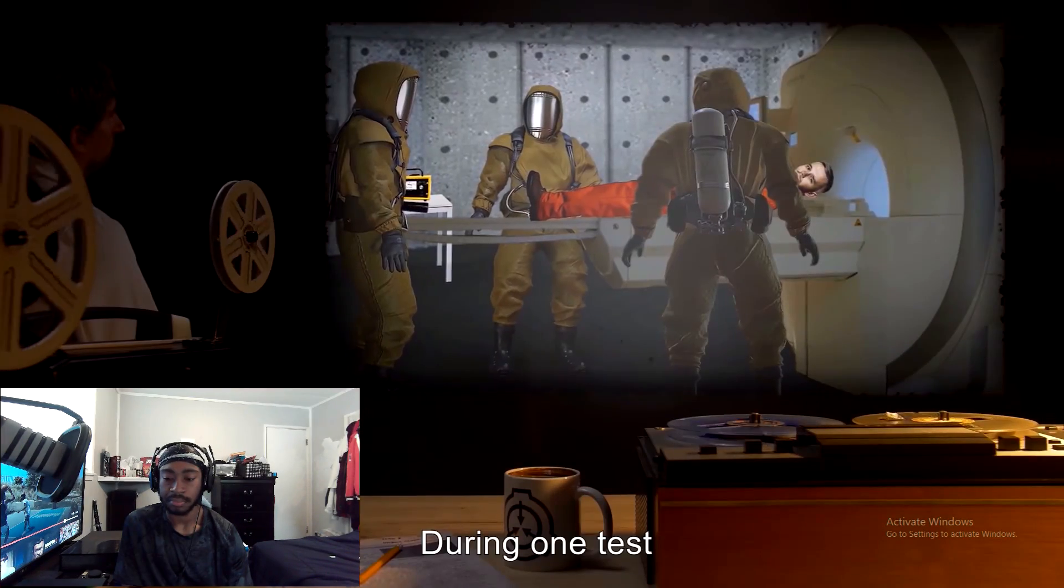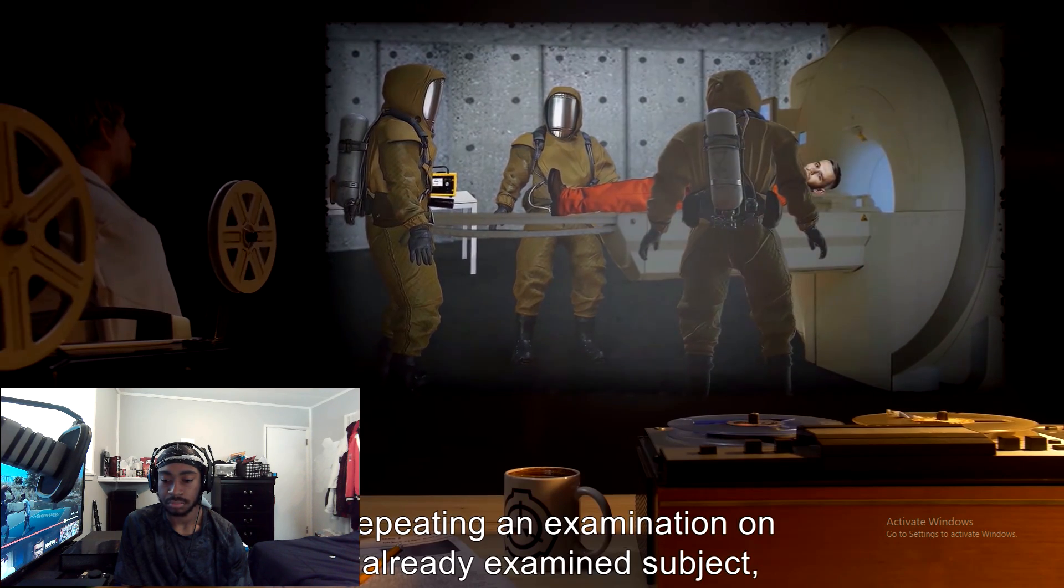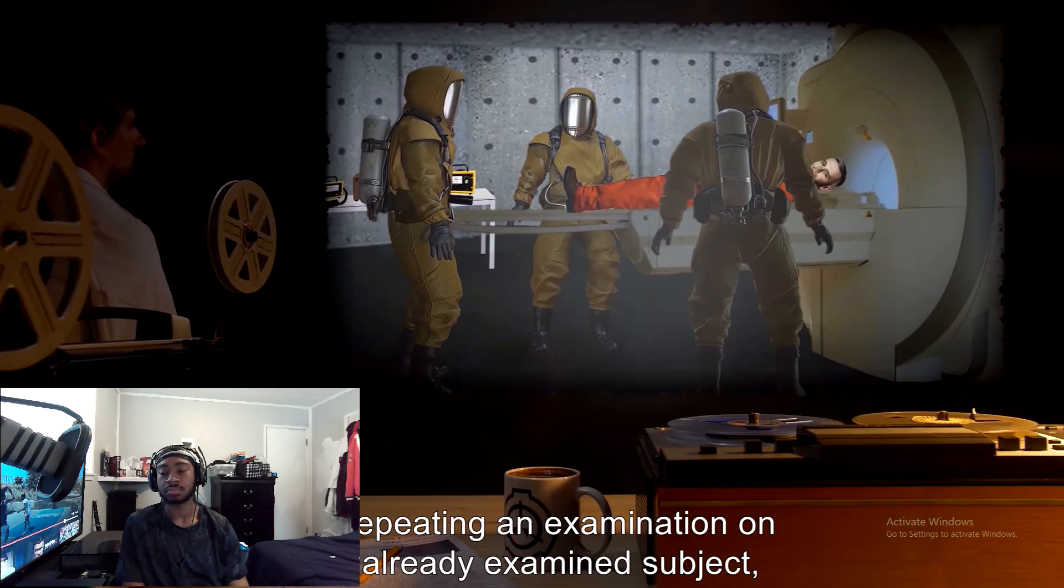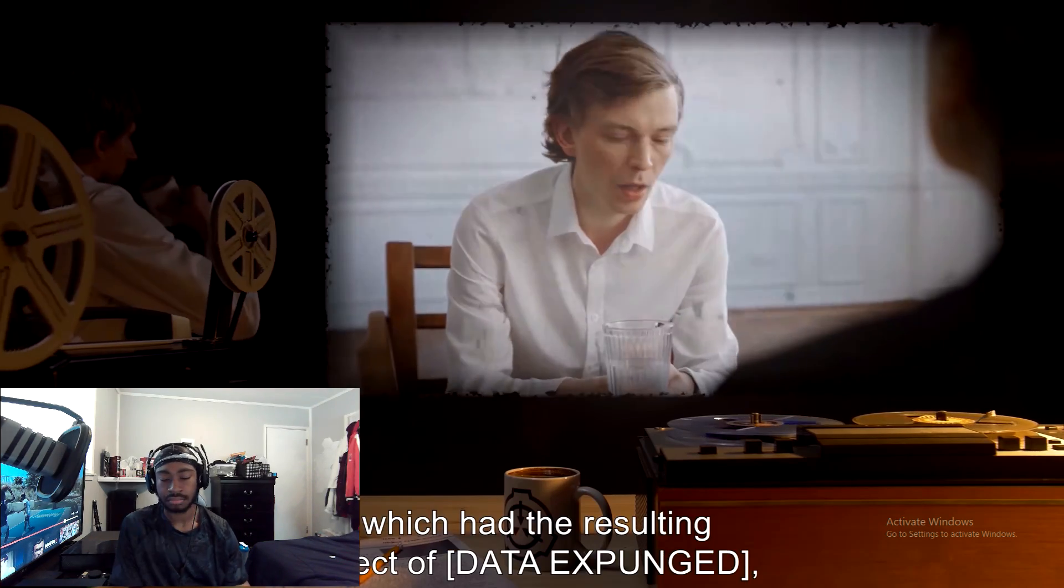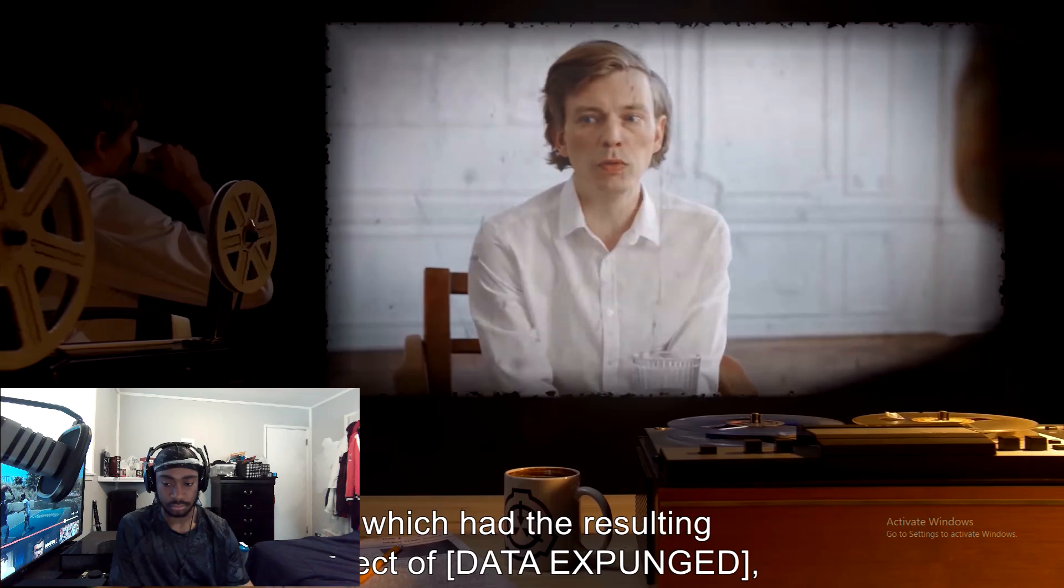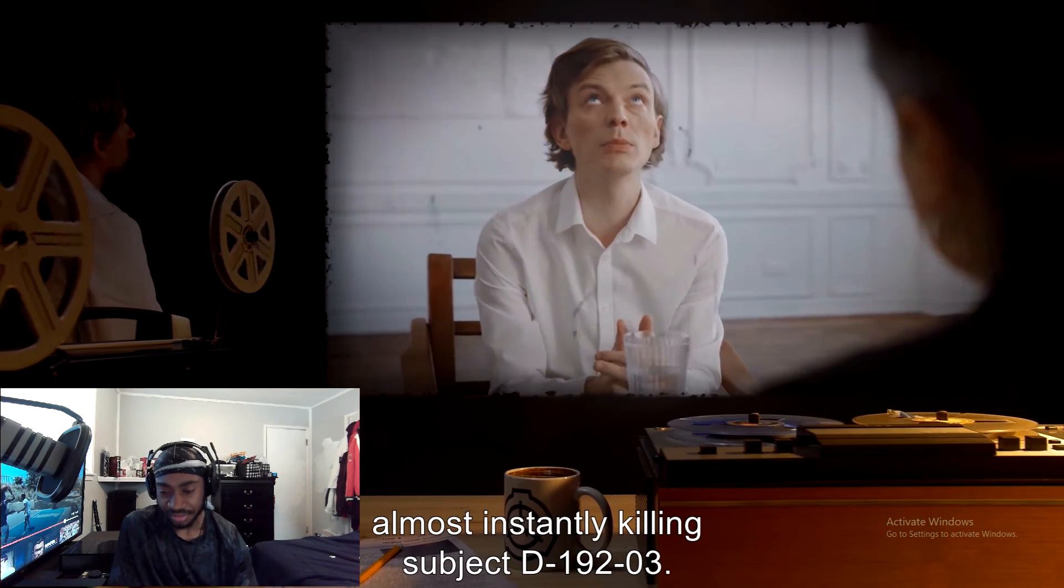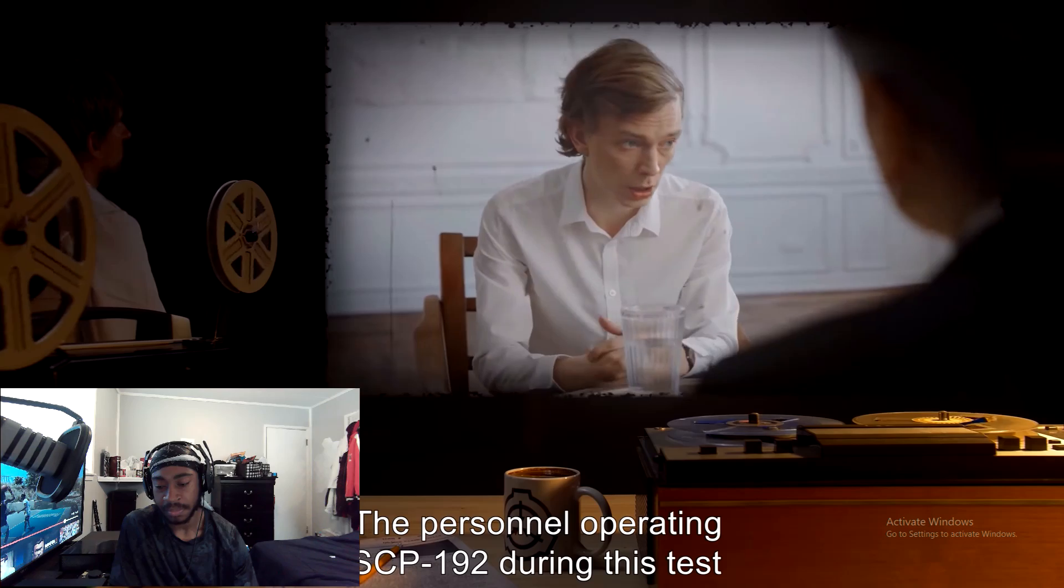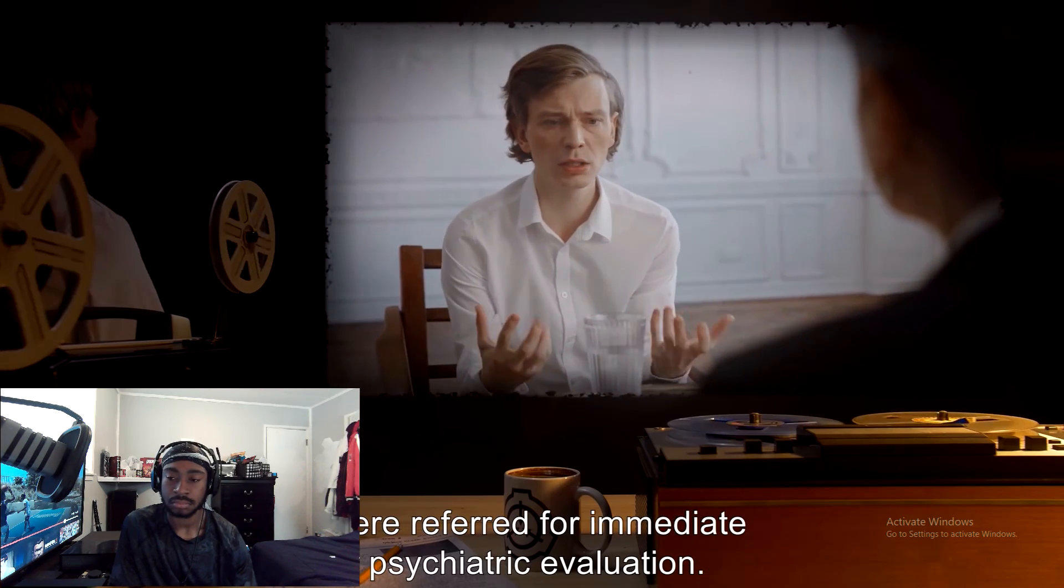During one test to determine if SCP-192 could be used as a means of treatment by repeating an examination on an already examined subject, SCP-192 produced a blurry image which had the resulting effect of data expunged, almost instantly killing subject D19203. The personnel operating SCP-192 during this test were referred for immediate psychiatric evaluation.